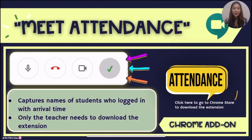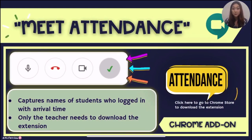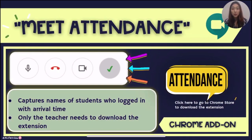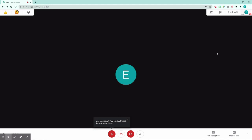The next one is another Chrome extension called Google Meet Attendance. This is a time-saver tip for teachers looking for a solution to keep track of who is present and who is not in your sessions. It captures the names of students who logged into your Google Meet session and gives each student a time stamp. Only the teacher will need to download this extension. Once you download it, you will see a little check mark appear next to your camera icon.